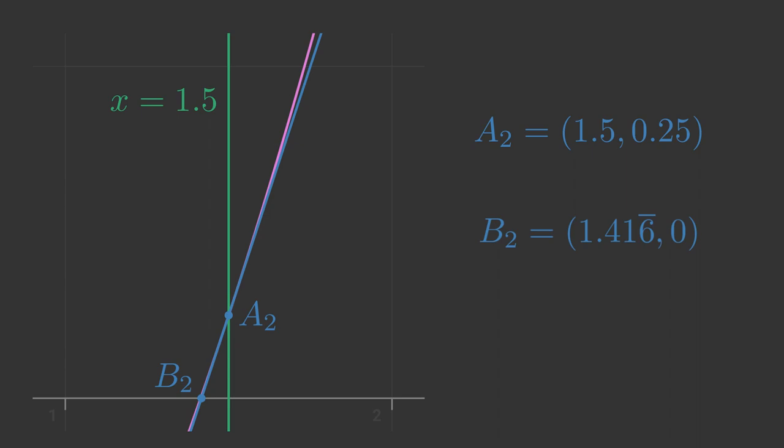We can iterate over and over, using the previous approximate value of x to calculate a new approximation. On each iteration we zoom in on a smaller and smaller section of the curve. As we zoom in more, the section of the curve looks more and more like a straight line, so the approximation gets more and more accurate. This method often converges on the correct value very quickly.